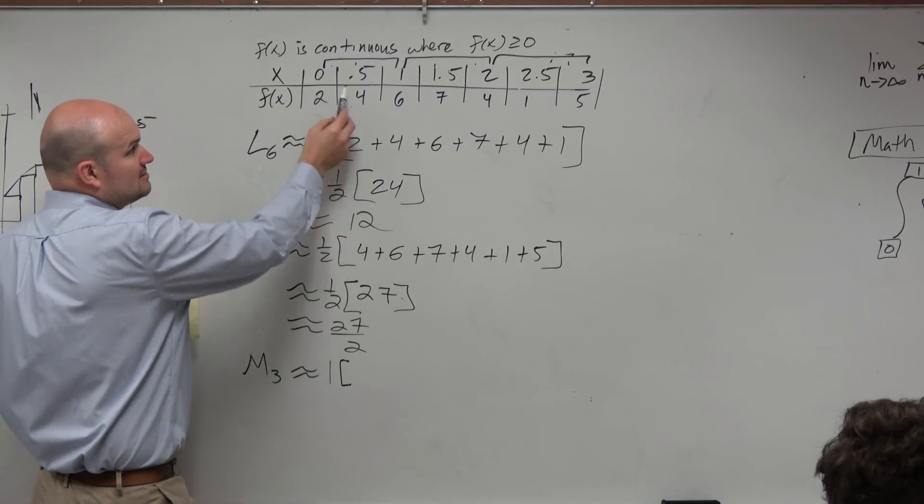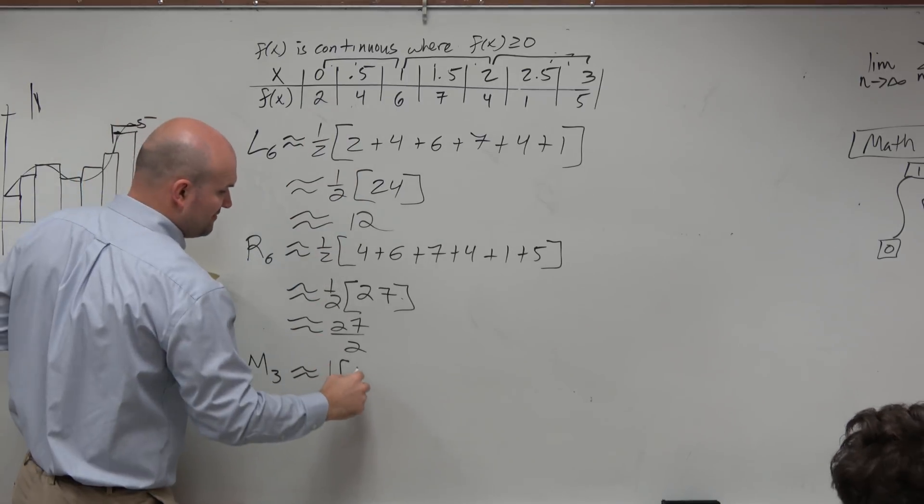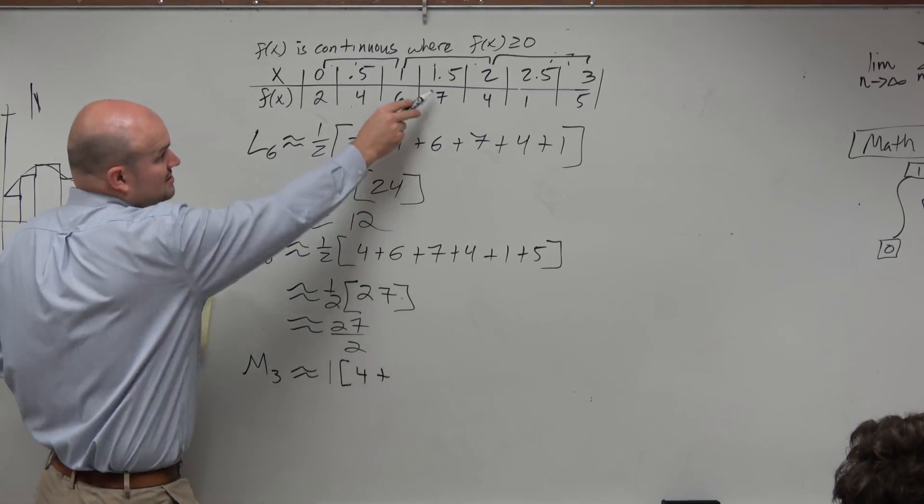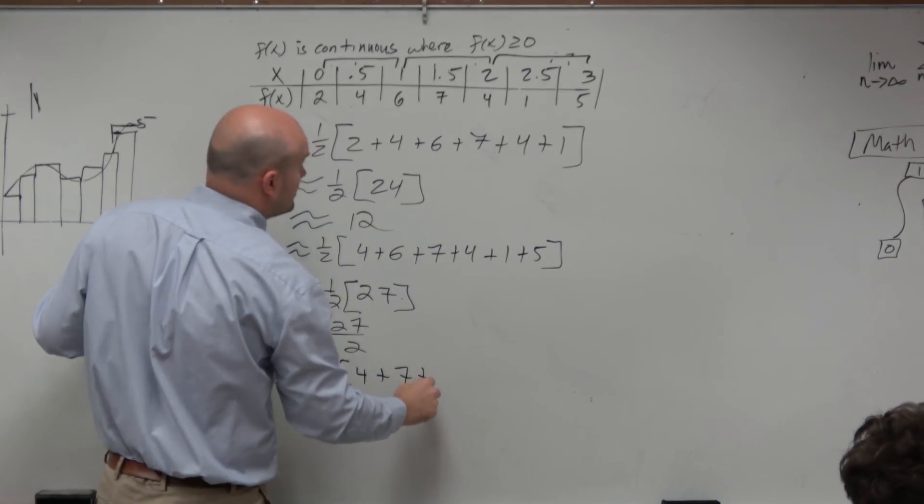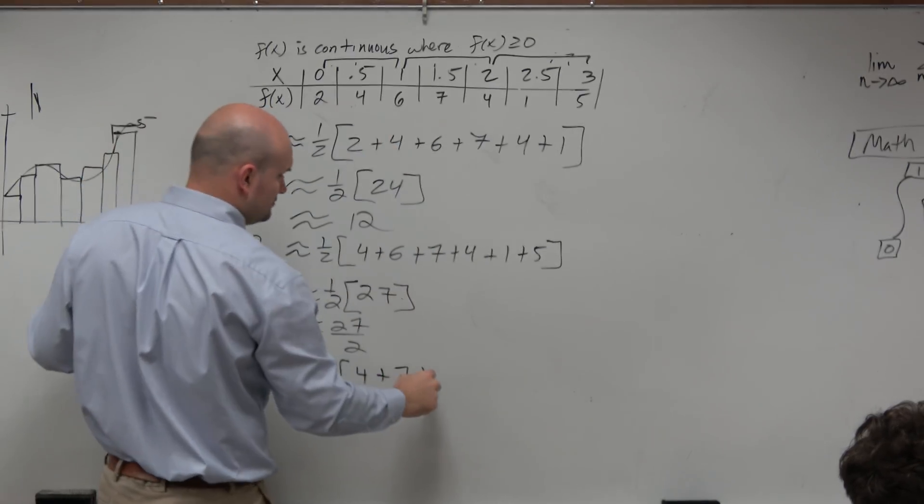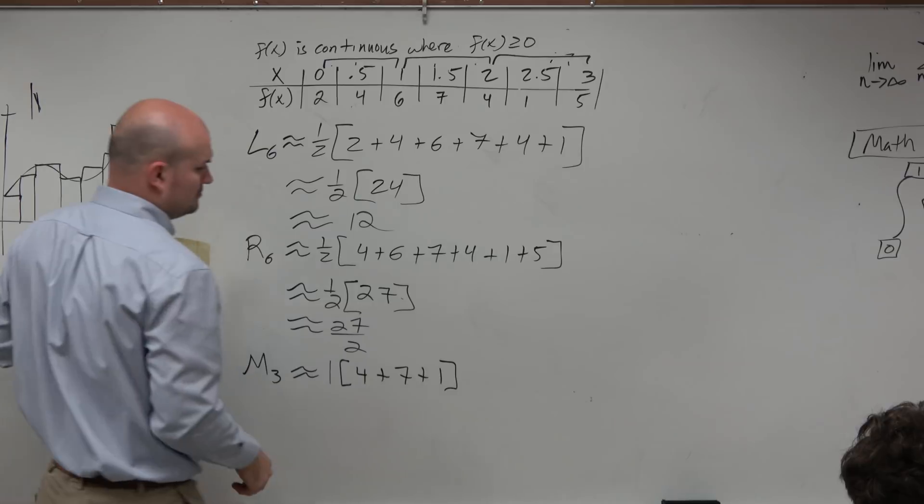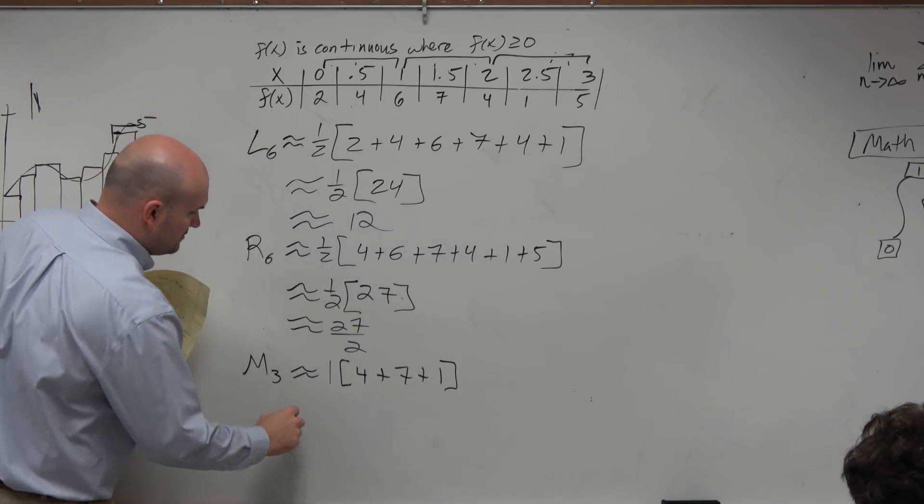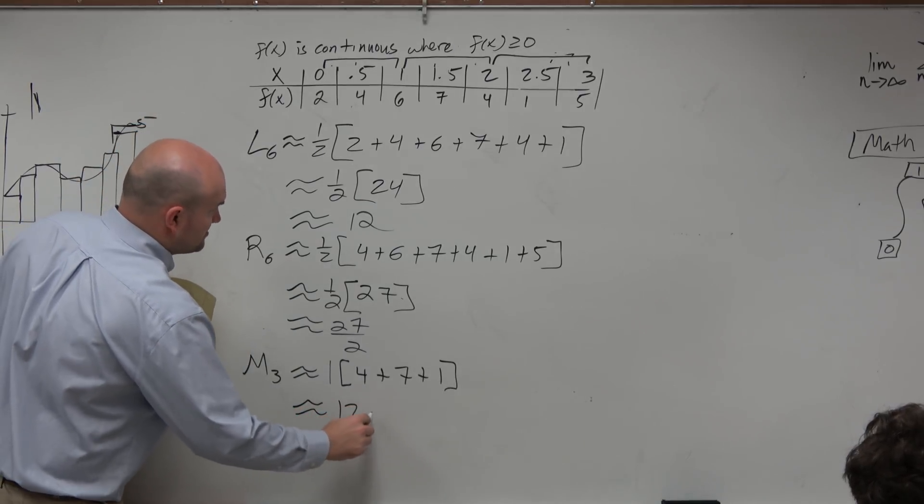So now it's 1 times—now the height here is going to be 4 plus 7 plus 1. So therefore, that area approximation is going to be 12.